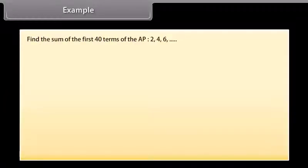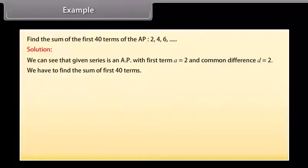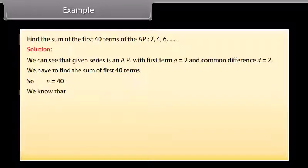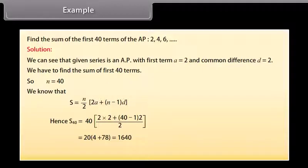Find the sum of the first 40 terms of the AP: 2, 4, 6, and so on. We can see that the given series is an AP with first term a = 2 and common difference d = 2. We have to find the sum of the first 40 terms, so n = 40. We know that S = n/2 × (2a + (n-1)×d). Hence, S40 = (40/2) × (2×2 + (40-1)×2) = 1640. So the sum of the first 40 terms of the AP is 1640.